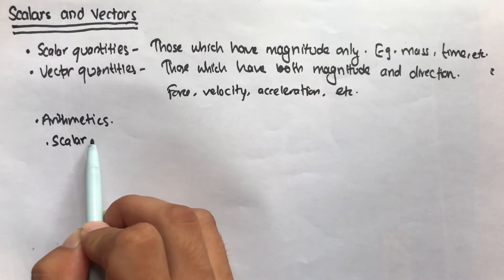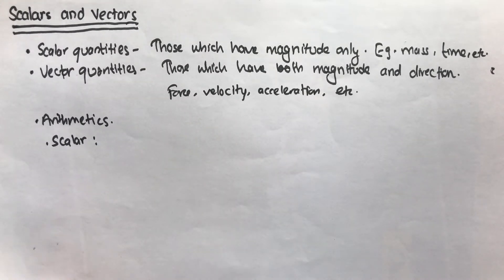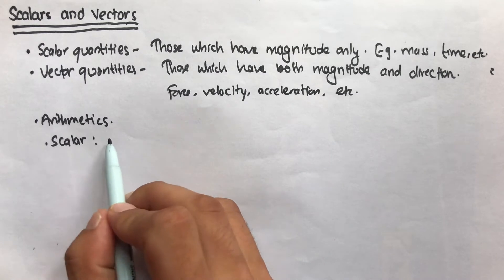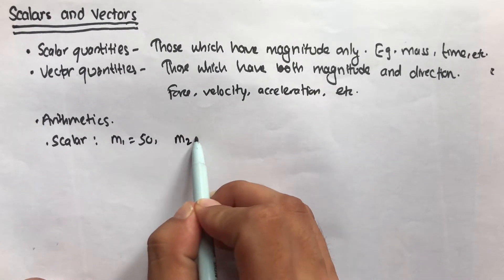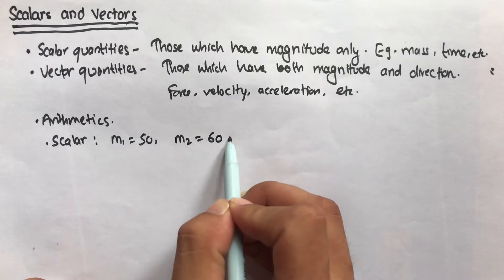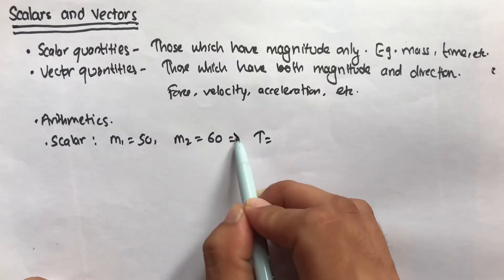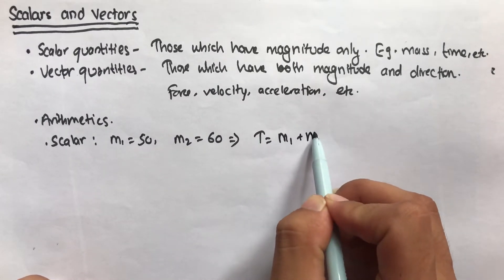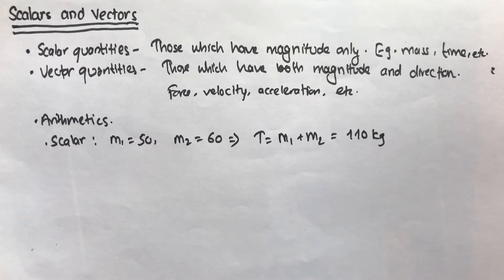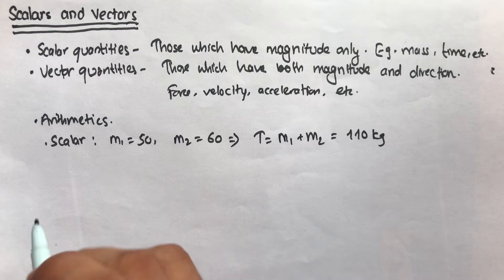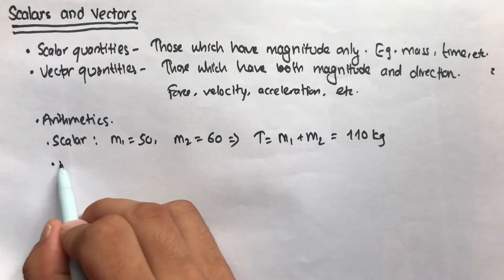Scalar arithmetic is very easy. If one person has a mass of 50 kilograms and another has 60 kilograms, the total mass is simply m1 plus m2, which gives 110 kilograms. Scalar addition, multiplication, division, and subtraction are all straightforward. Now let's look at vector arithmetic.